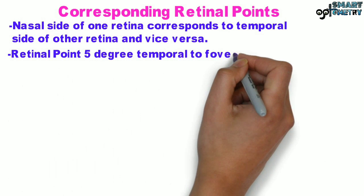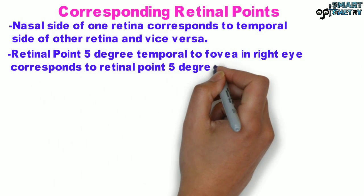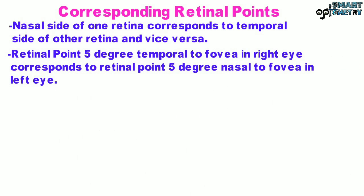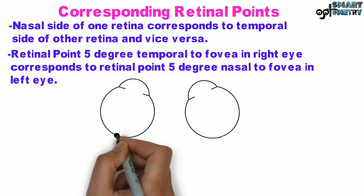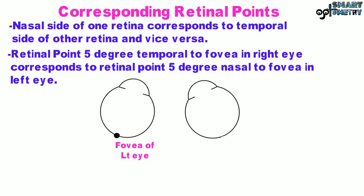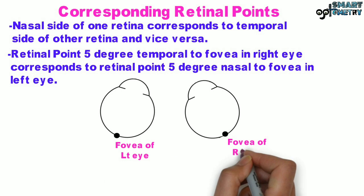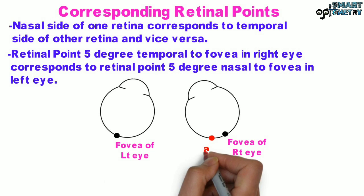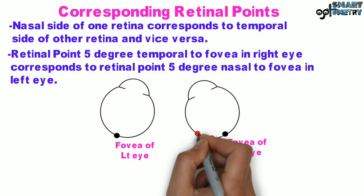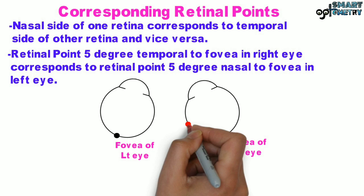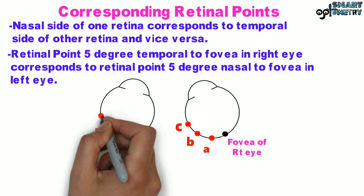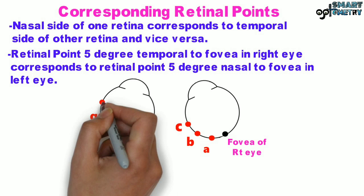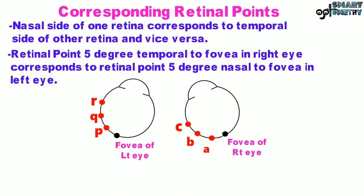Retinal point 5 degrees temporal to fovea in the right eye corresponds to retinal point 5 degrees nasal to fovea in the left eye. In the diagram below, along with the fovea of the left eye and the fovea of the right eye, the nasal retinal points A, B, and C in the right eye correspond to the temporal retinal points P, Q, and R in the left eye.